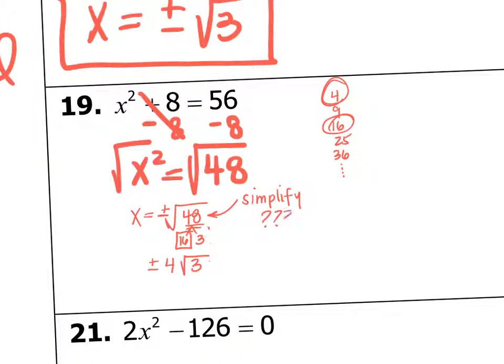Do we remember simplifying radicals? Because we did this last semester where we took square root of 48 and broke it down by perfect and non-perfect. And then the perfect was able to come out. Square root of 16 is 4. Square root of 3 plus or minus on the outside. So x equals plus or minus 4 radical 3.